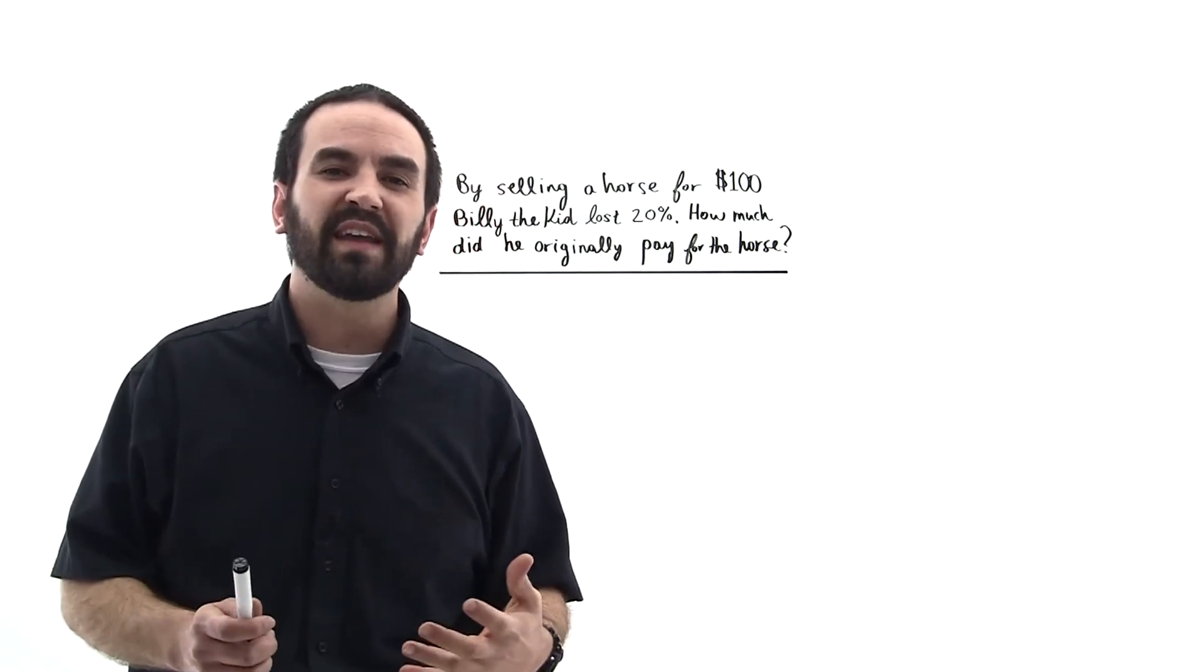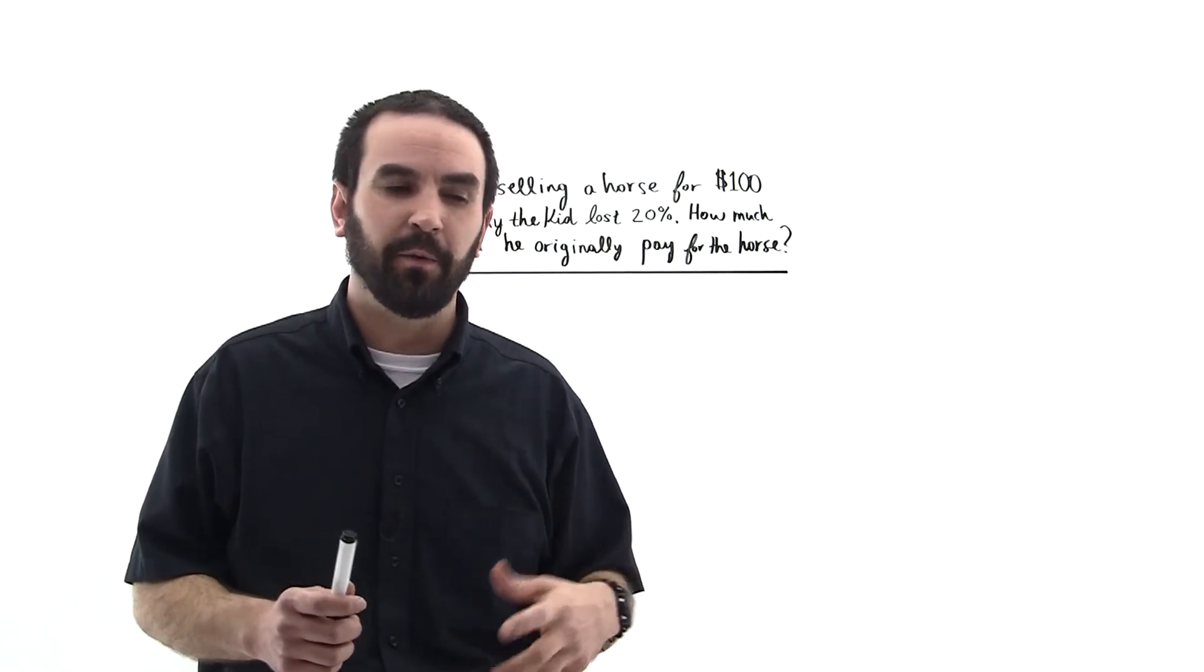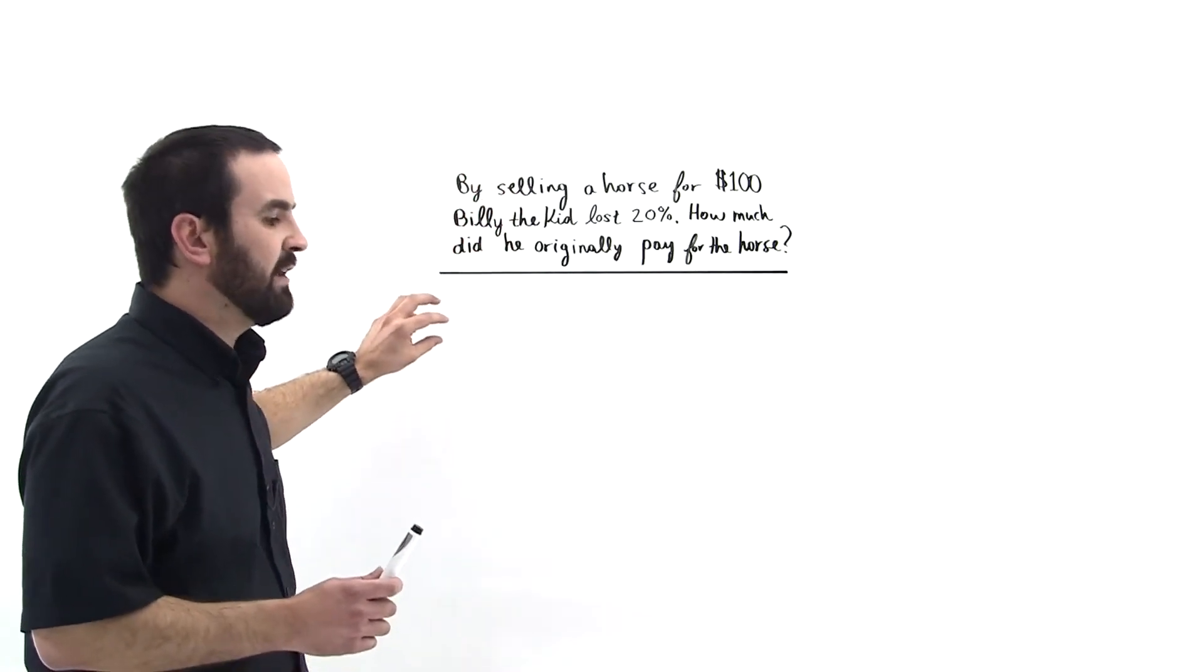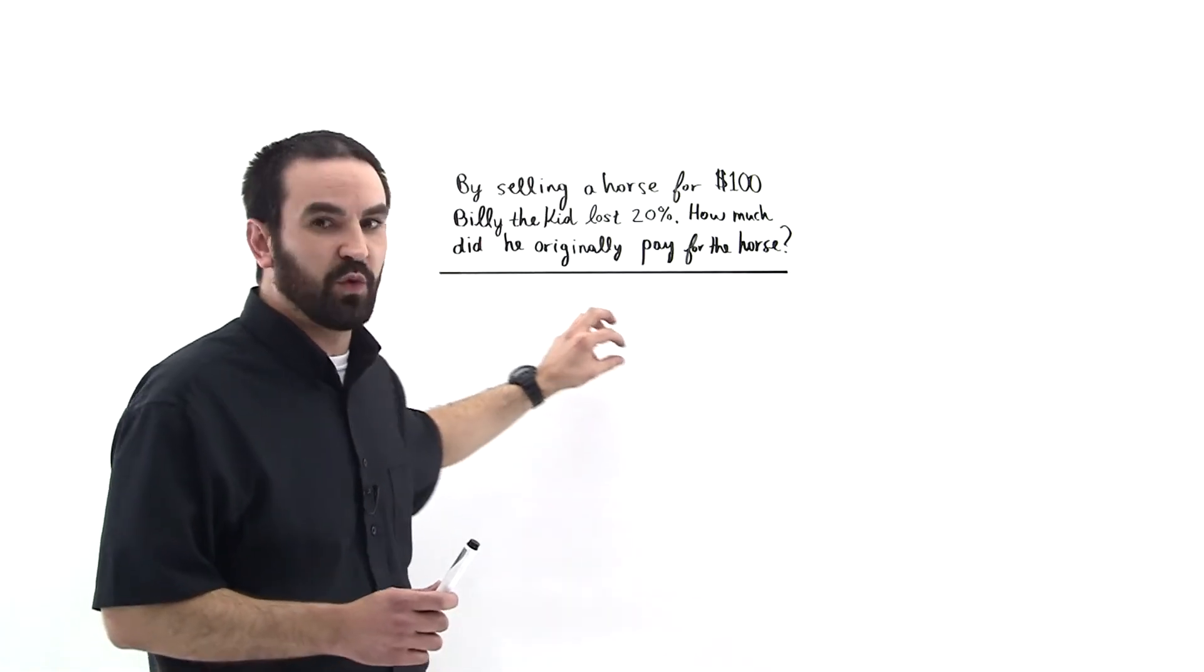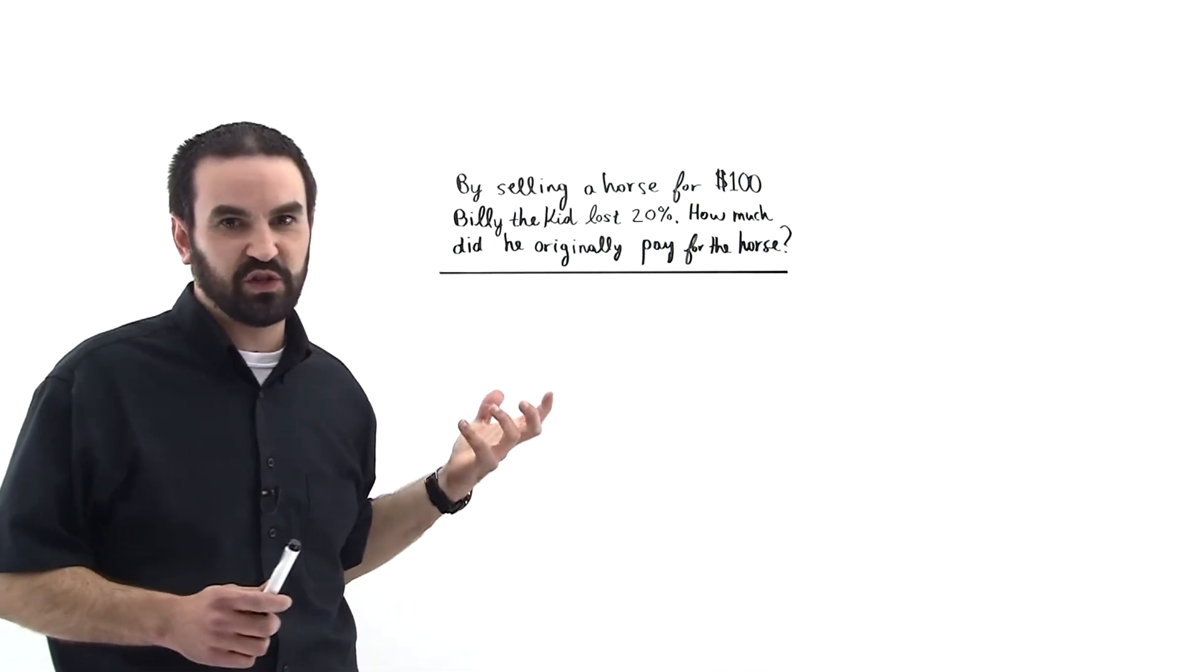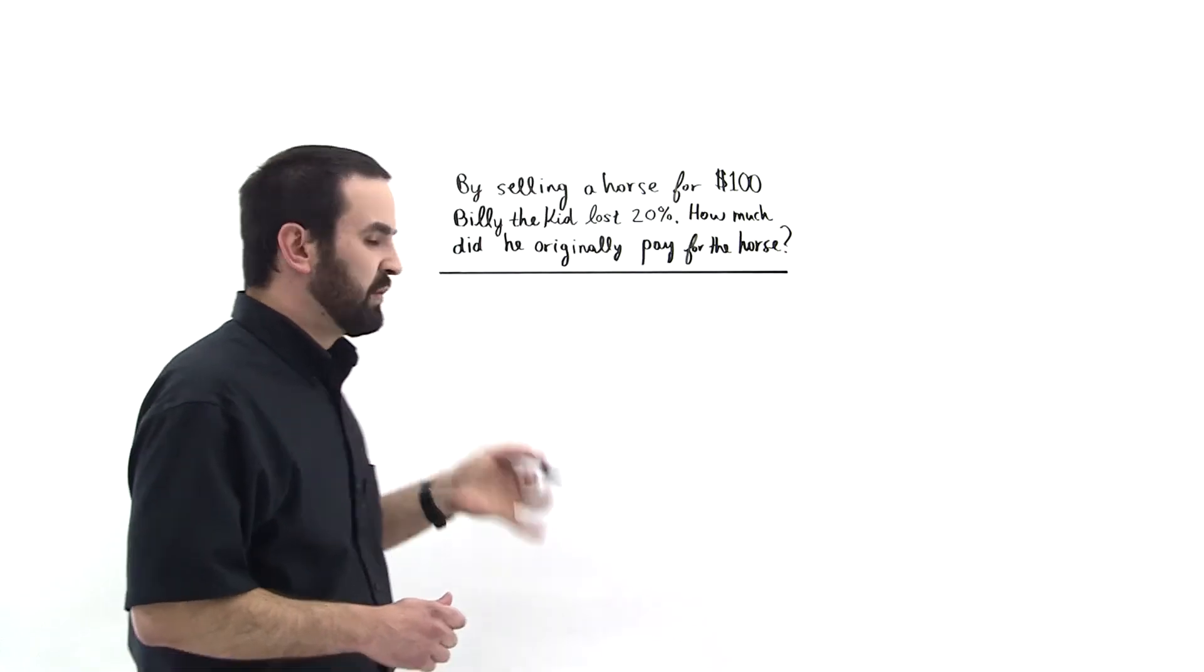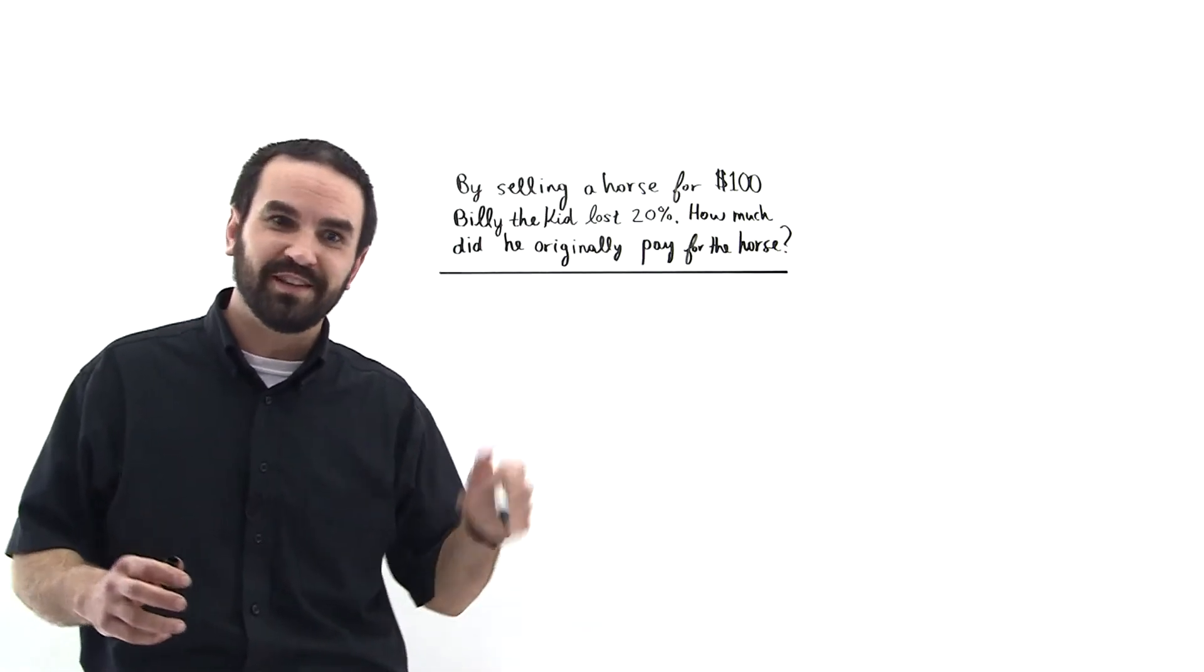Okay? And so this is a way to get around having to write down X times 0.8 equals 100, right? Which is what you need to do. But you don't need to do it. You just do this. Watch.